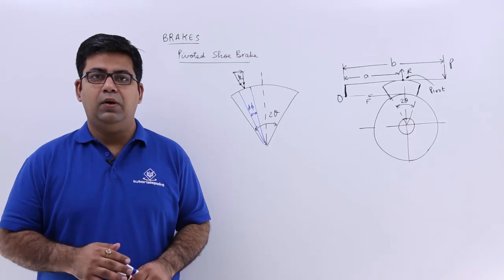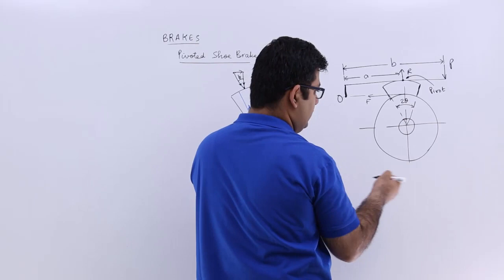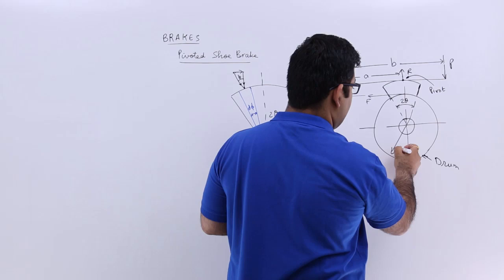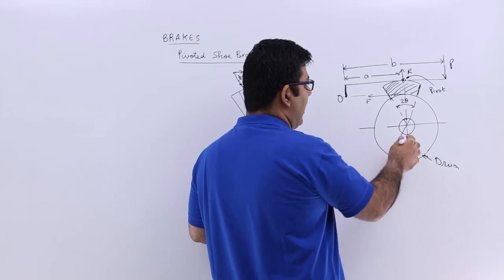Now let's talk about the pivoted shoe brake. So this is how a pivoted shoe brake looks like. If you go to this figure, this is the drum of the brake — the brake drum — the radius of this drum is small r. You have this shoe which is pivoted with the lever at this point, and the angle that this shoe is making at the center of the drum is 2 theta.